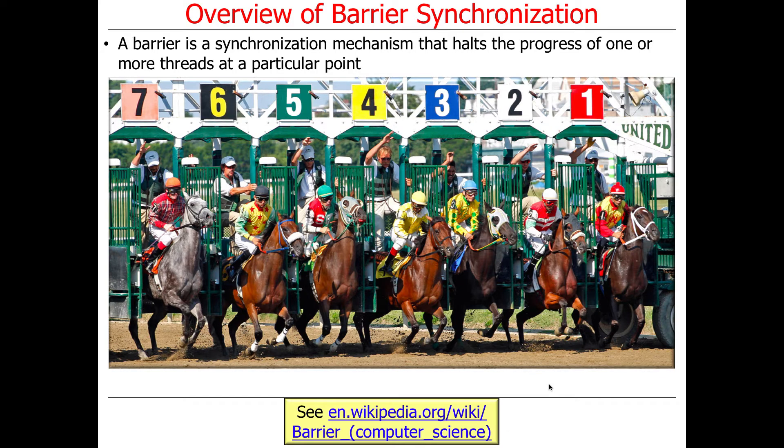A barrier is basically a synchronization mechanism that halts the progress of one or more threads at a particular point. An example of an entry barrier would be the starting gate for a horse race, where all the horses show up and get into their starting gate. Only when they're all in place and the gun goes off do they all begin to start.